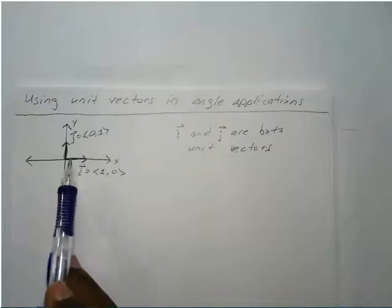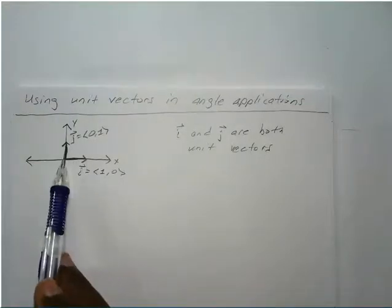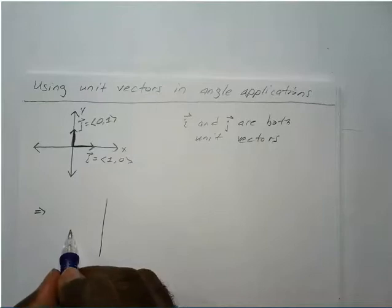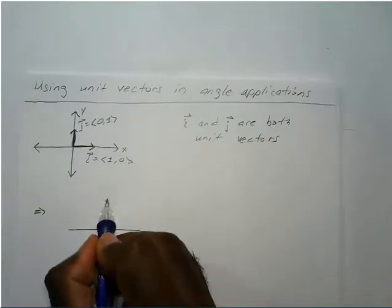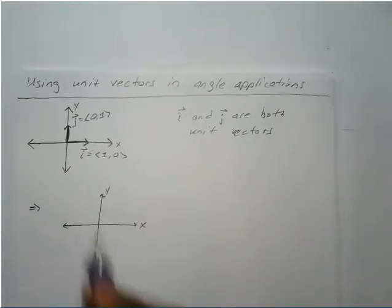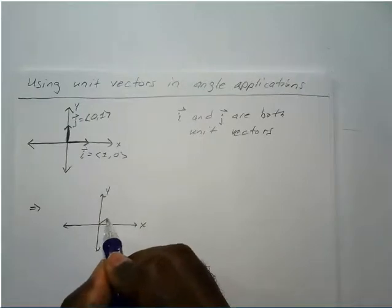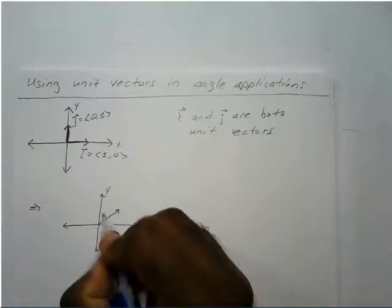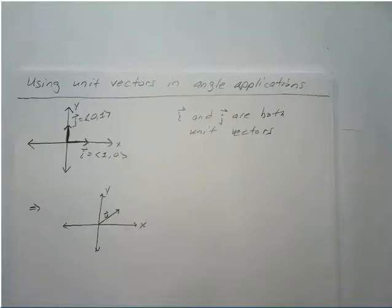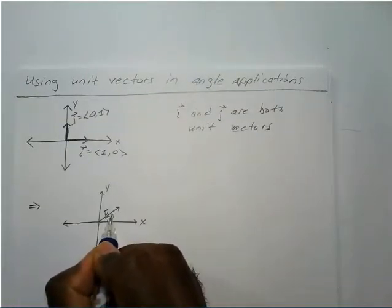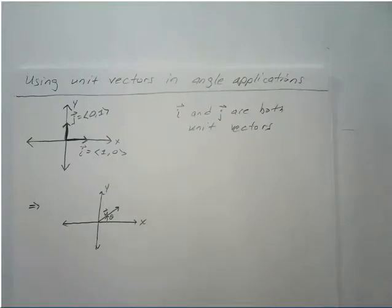What if the vector is not going along the x-axis or along the y-axis? If we draw our XY axis again, what if our unit vector goes in a different direction — not left-right, not up-and-down, just another direction? Well, the first thing we do is we want to know exactly how many degrees up our vector is going.